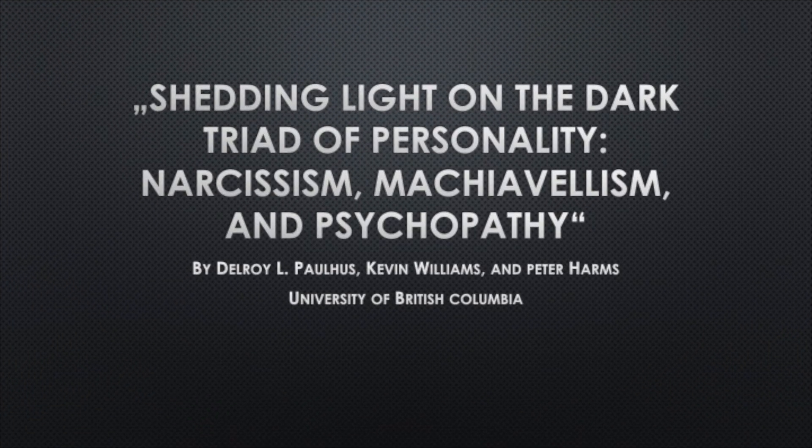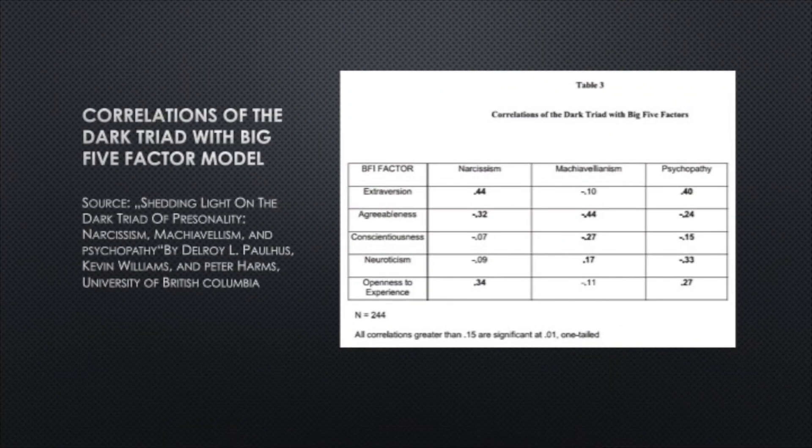Let's go into the research paper from Paulhus, Williams and Harms, Shedding Light on the Dark Triad of Personality: Narcissism, Machiavellianism and Psychopathy. This research paper has found that there are different correlations between the dark triad and the big five, the five-factor model. So basically the big five or the five-factor model is the measurement to measure normal personalities or the bright side of personality. You can easily remember this if you go with the acronym of OCEAN. So we have openness to experience, conscientiousness, extraversion and agreeableness.